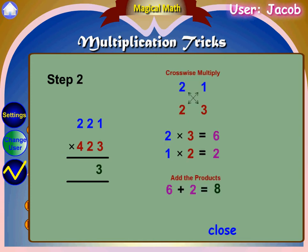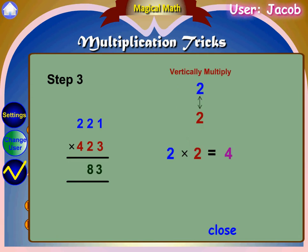Step 2: crosswise multiply 2 and 3, and 2 and 1. 2 times 3 equals 6, and 2 times 1 equals 2. Adding the products: 6 plus 2 equals 8. Step 3: vertically multiply the middle digits 2 and 2. 2 times 2 equals 4.